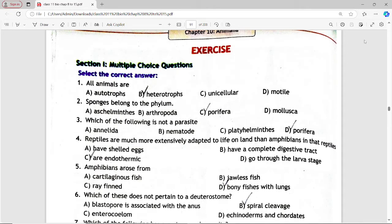Next MCQ is: reptiles are much more extensively adapted to life on land than amphibians in that reptiles. Options are have shelled eggs, have a complete digestive tract, are endothermic, go through larva stage. Answer is option C, are endothermic.